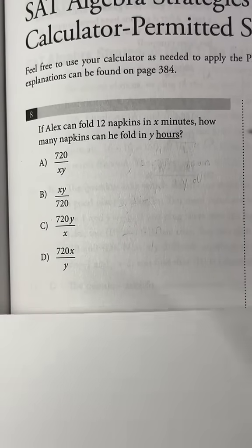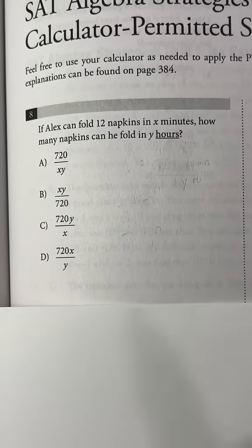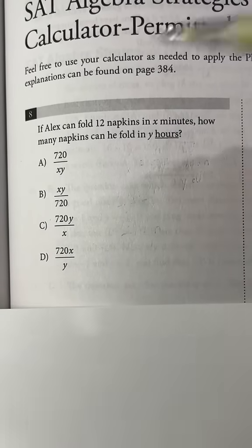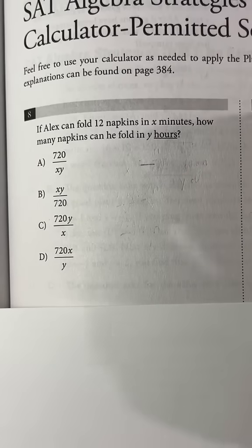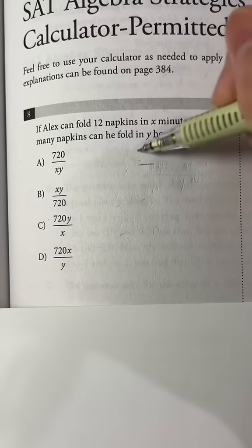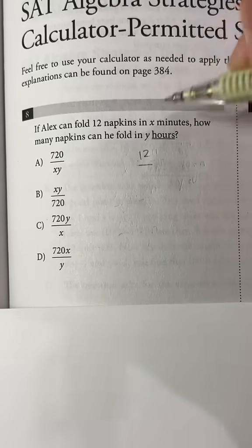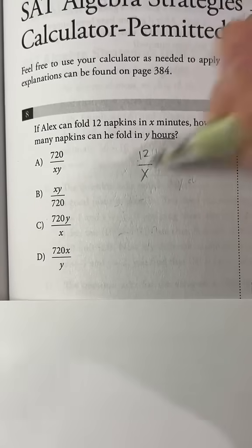Okay, so to solve this question, we can set up a proportion. It's going to be two fractions equal to each other. The numerator, or the top, is going to be the amount of napkins folded. So the first fraction is going to be 12 napkins over the amount of time, which is x minutes.